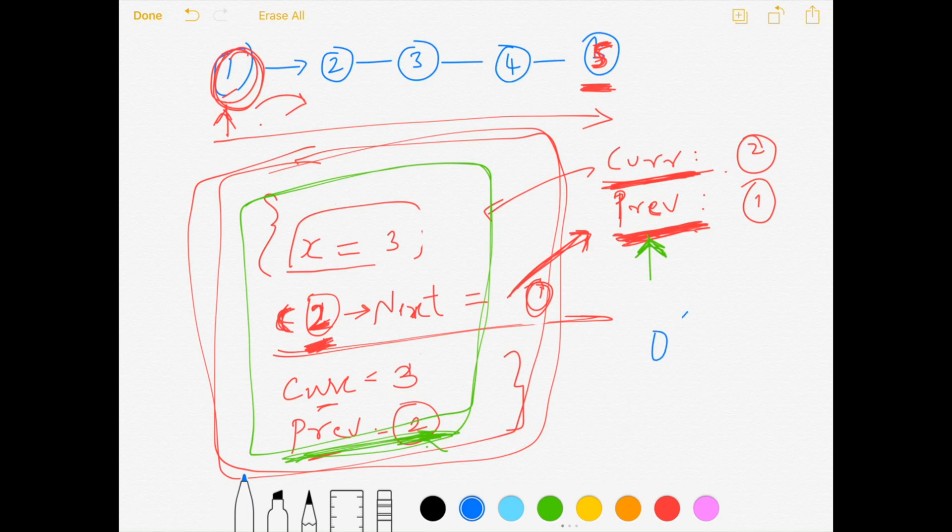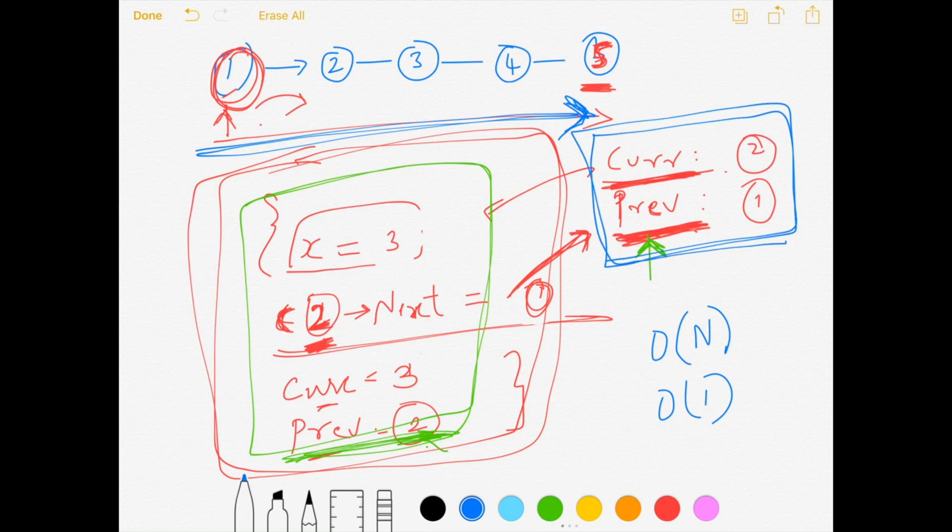This approach gives us the time complexity of O(n) because we are iterating through all the elements only once. And our space complexity is O(1) because we are not creating any additional collections. We are only using these two variables to hold the current state of iterations.